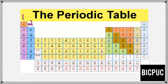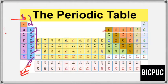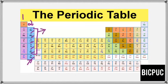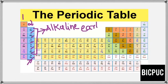Group 2 of the s-block elements contains beryllium, magnesium, calcium, strontium, barium, and radium. From beryllium to barium these are available in nature, while radium is radioactive. Group 2 of the s-block elements are referred to as Alkaline Earth Metals, while Group 1 is called Alkali Metals.